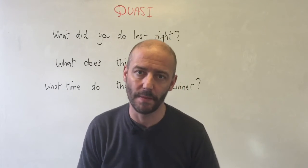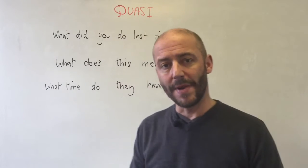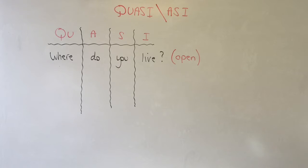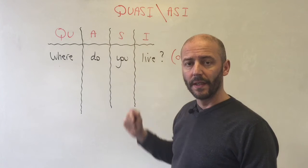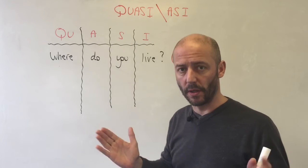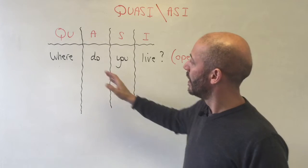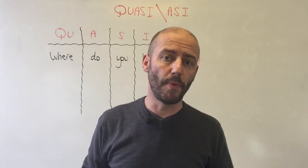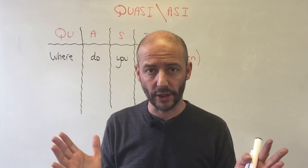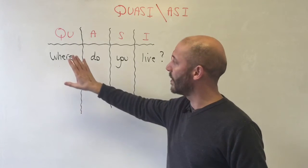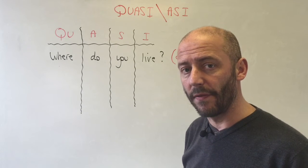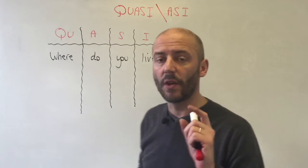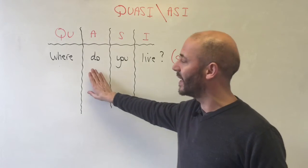QUASI deals with what we call open questions — for example, where do you live? I live in Bournemouth. These are open questions because we begin with a question word. We also have what we call closed questions, which follow the ASI pattern. These questions begin with the auxiliary verb — there is no question word.